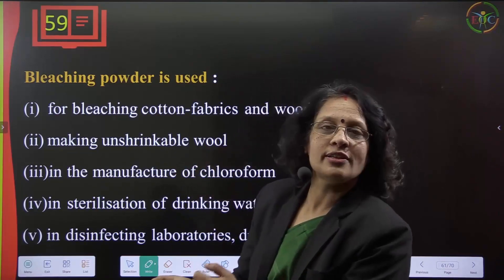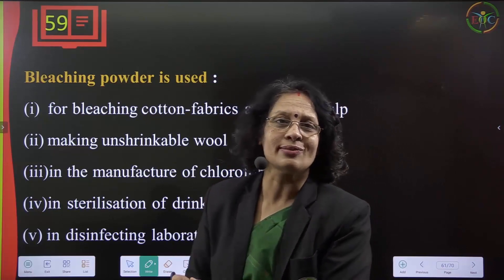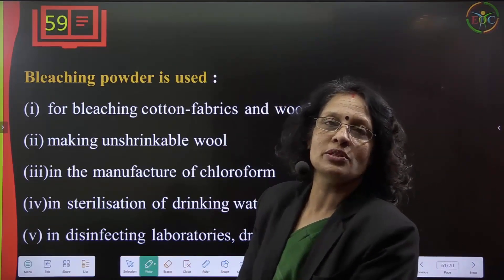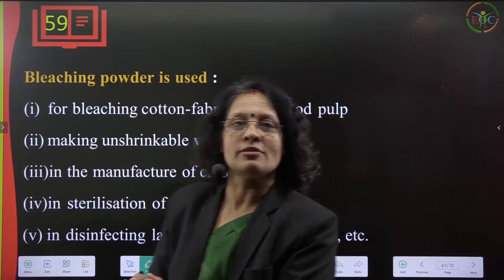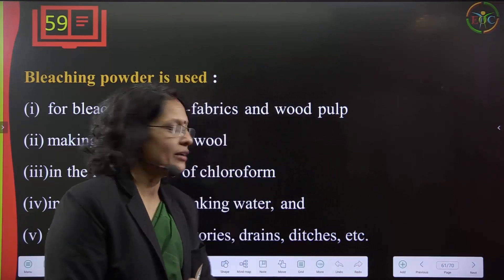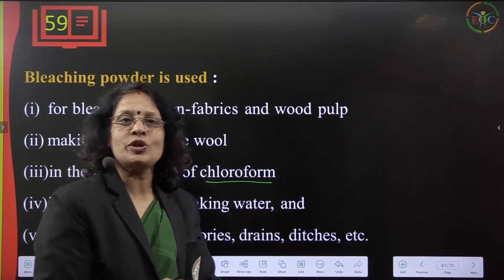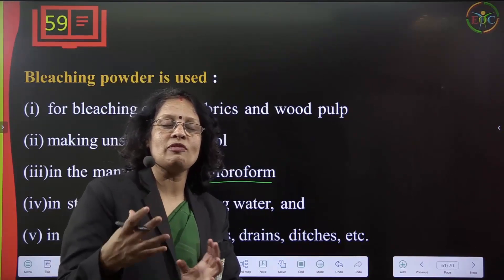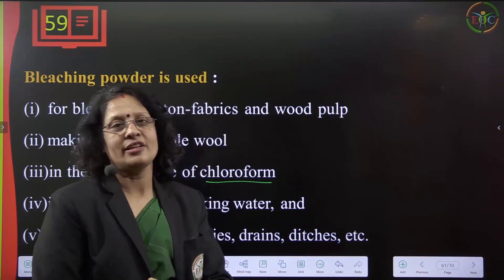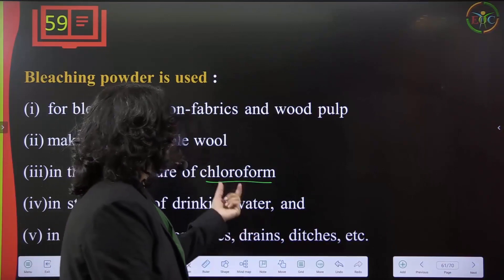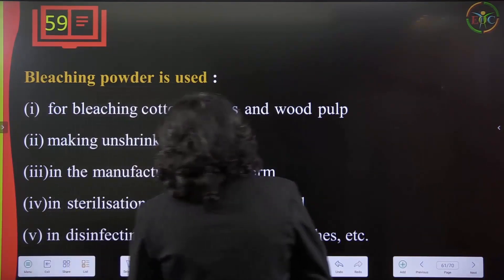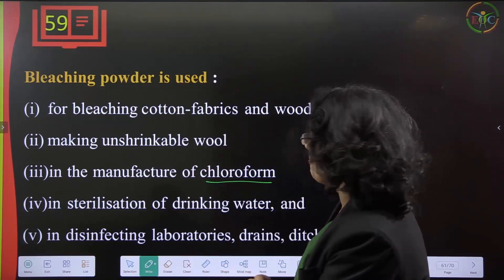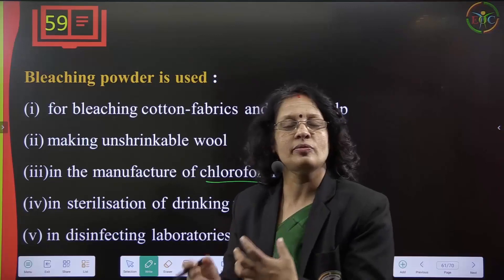Bleaching powder is used for making unshrinkable wool — synthetic wool that doesn't shrink or wrinkle — for jackets and windcheaters. It is also used in manufacturing chloroform. Chloroform was used as an anesthetic in olden times and is still used in laboratory applications. It is also used for sterilization of drinking water and as a disinfectant in laboratories, drains, and ditches.